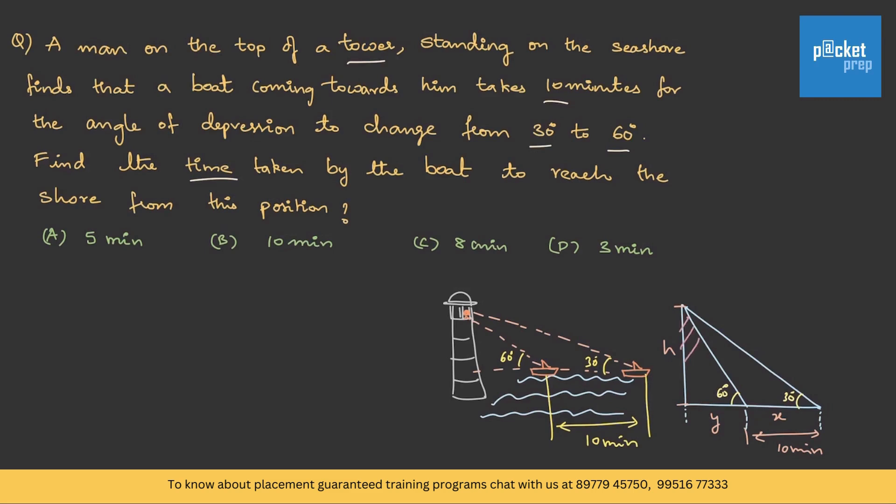Using the trigonometric ratios, let's solve this. First, let me take this particular triangle. From this triangle, I can write tan 60 is opposite by adjacent, so h by y. Tan 60 we already know is root 3. From this, I can write y is h by root 3.